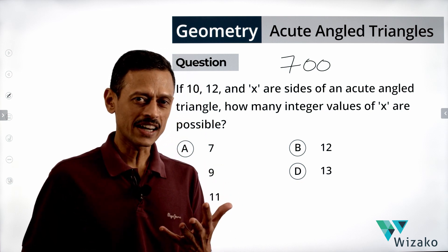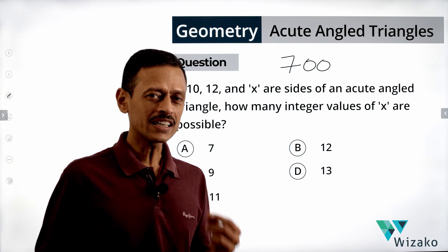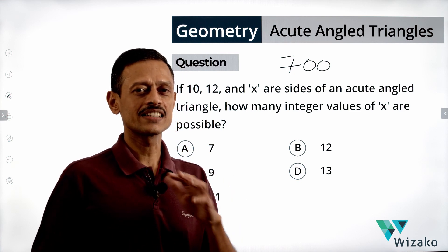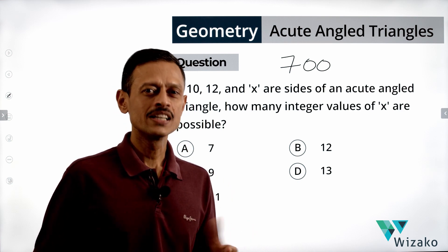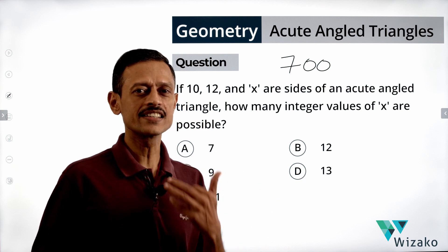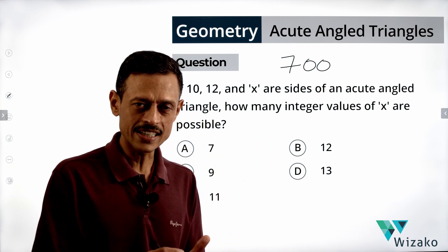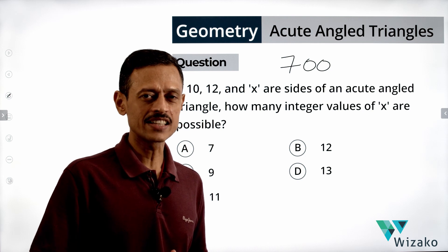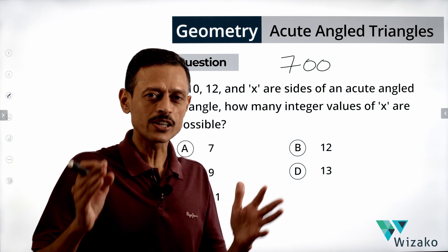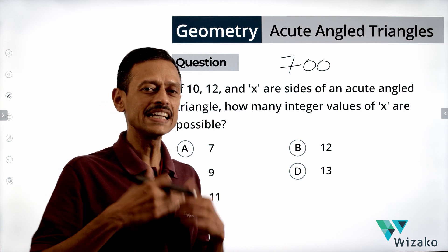What is an acute angle triangle? An acute angle triangle is a triangle in which all three interior angles are less than 90 degrees. An example could be angles of 50, 60, and 70 degrees — their sum is 180 degrees and all three are less than 90 degrees, so it's an acute angle triangle.